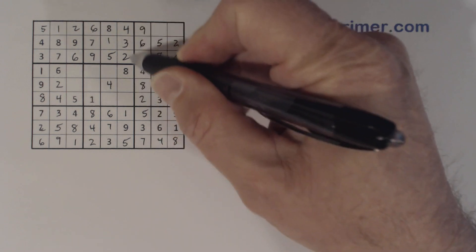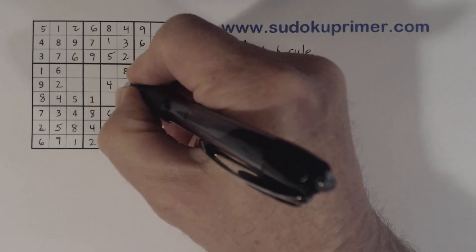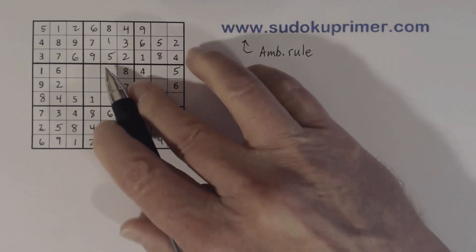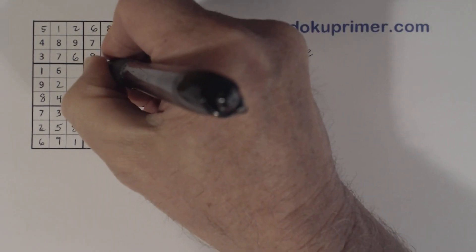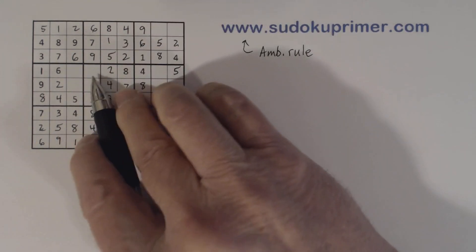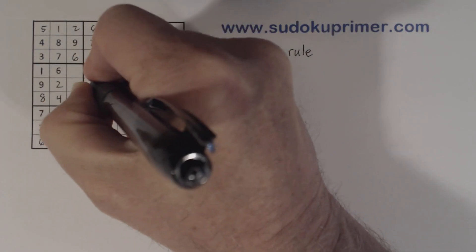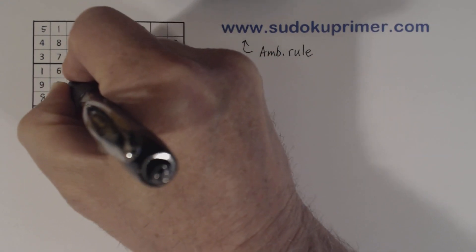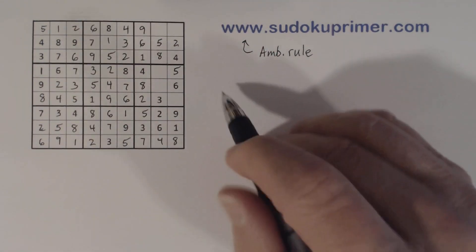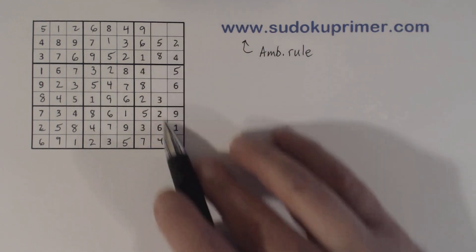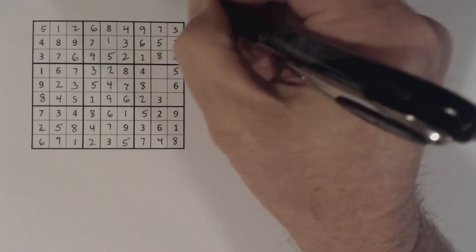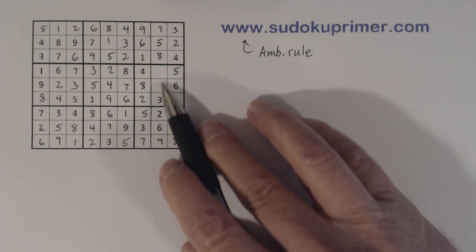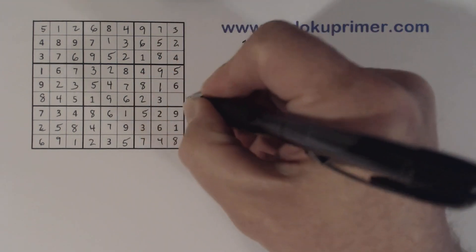Now we're missing 6 and 7 in this column, 2 and 9 here, and 3 and 5 there. These are the 3-7 twins we mentioned earlier, and these are 3 and 7. We've only got 3 numbers left — 1, 7, and 9. And we've got it!